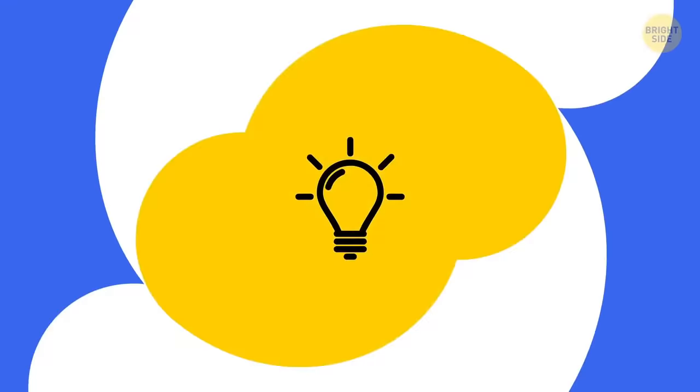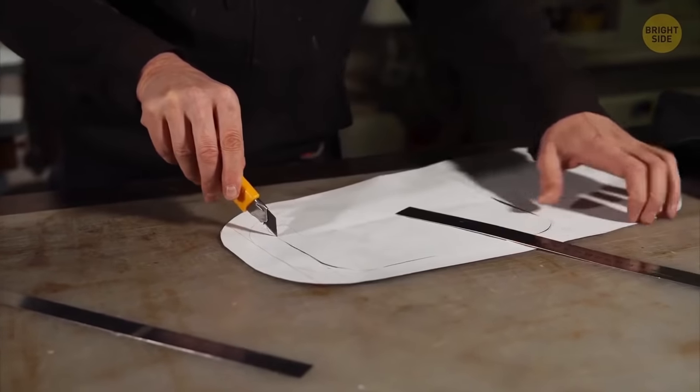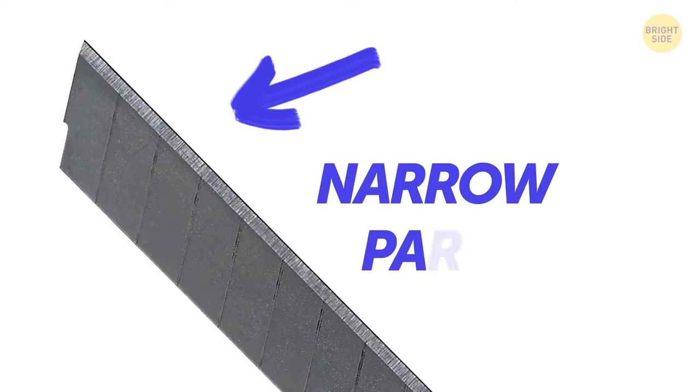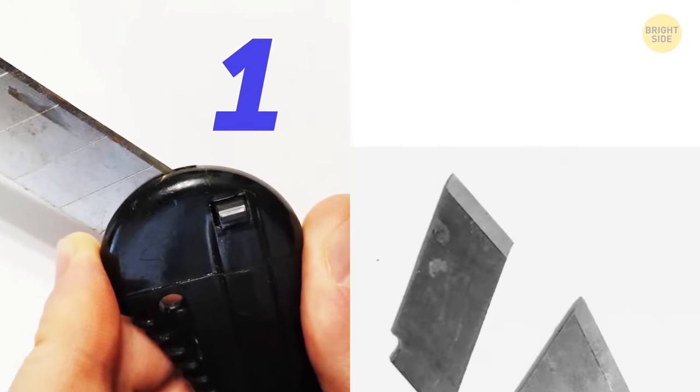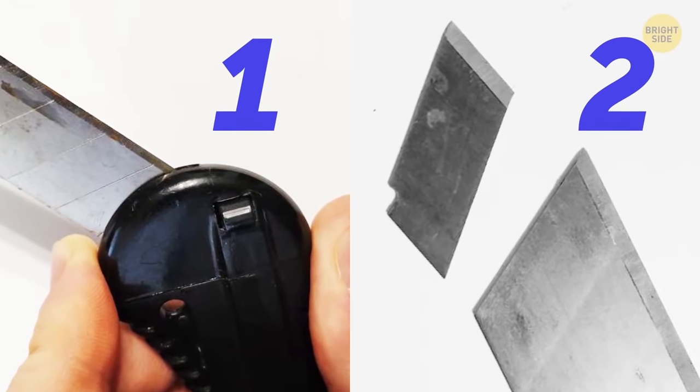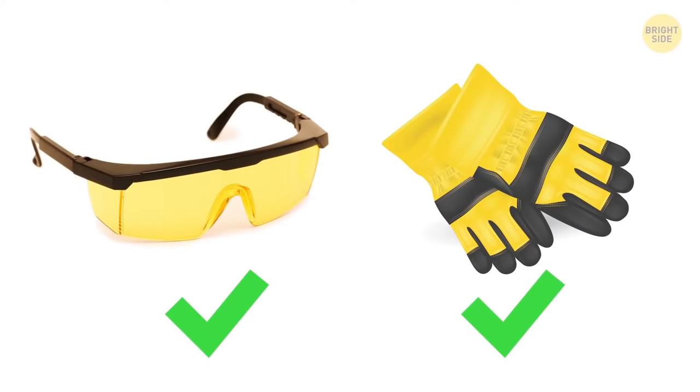This instrument is supposed to last way longer than most people think. Take a good look at the knife's blade, and you'll notice that it's made of narrow, parallel sections. When your knife gets blunt, break off the top section with the cap you find at the bottom. Voila! You have a brand new sharp blade again. Just don't forget to put some safety gloves and goggles on first.